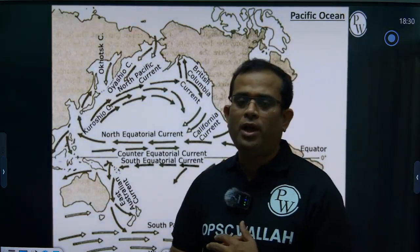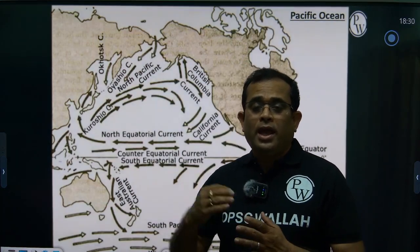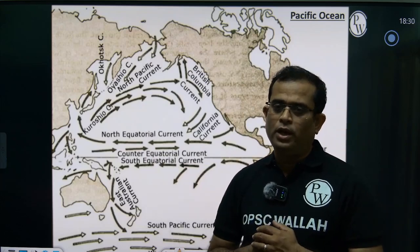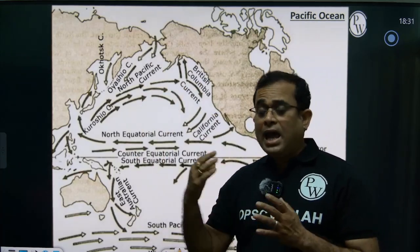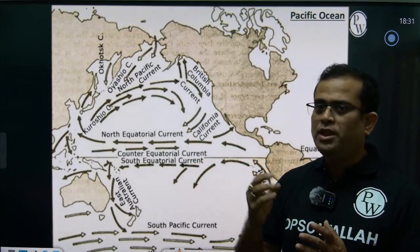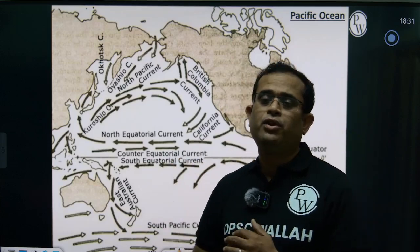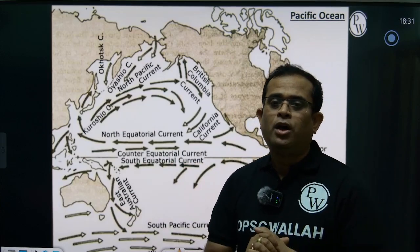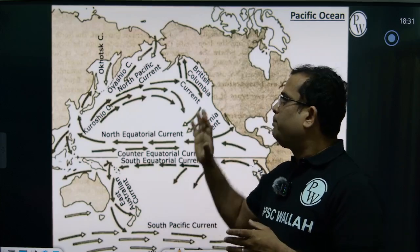Ocean currents play a very pivotal role in the global heat balance. Warm ocean currents flow towards the poleward cold current, and from the poleward cold current it flows back towards the warm current. Warm currents also bring algae, which is a very good nutrient for phytoplankton growth, which is a major requirement for the marine food ecosystem.